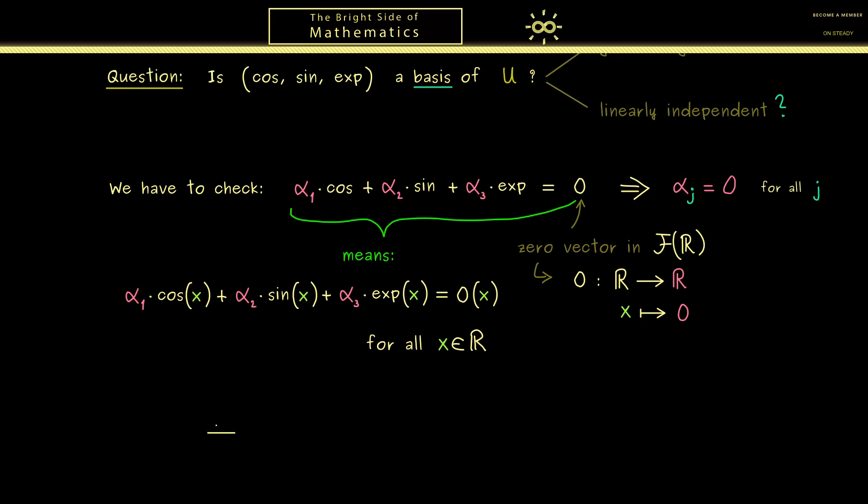And since we want to show the linear independence, we have to choose at least three. Of course, we could also take more, but if we choose correctly, three are enough. Okay, now one good choice might be the origin, so let's choose x is equal to zero.